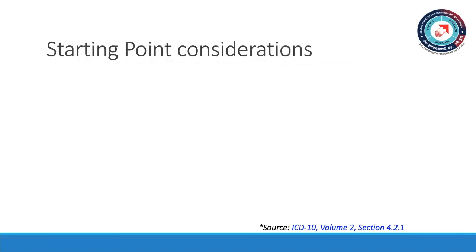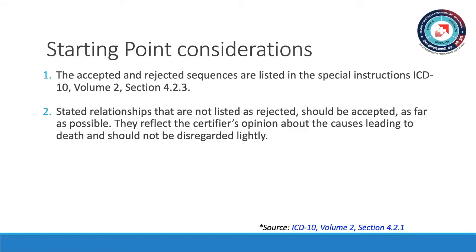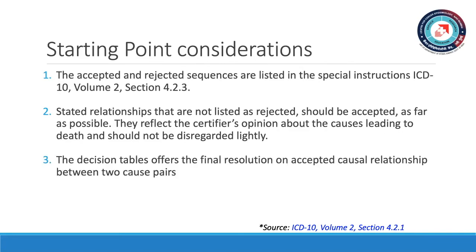An important point to consider with step SP3 is duration. The condition mentioned first on the lowest used line may still have caused all conditions reported on the lines above, if none of them has a duration that is longer than that of the condition mentioned first on the lowest used line. Take a look at the example in which liver metastasis and bronchopneumonia can be caused by stomach cancer. Bronchopneumonia cannot cause liver metastasis, and the bronchopneumonia has a shorter duration than the liver metastasis. This means stomach cancer is a tentative starting point.